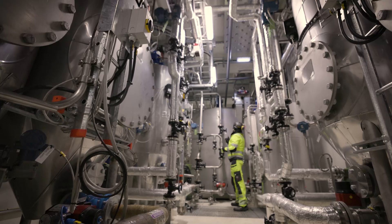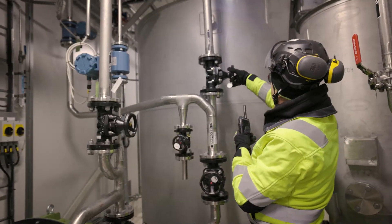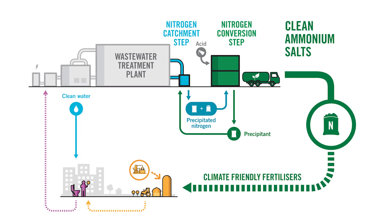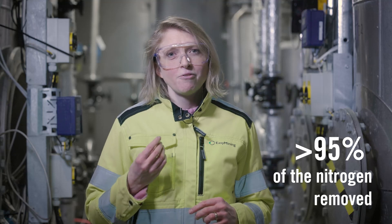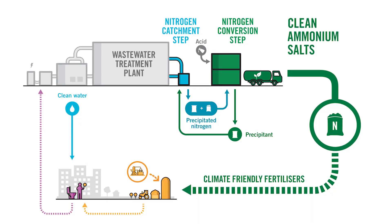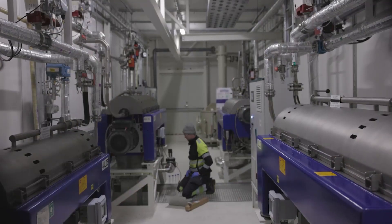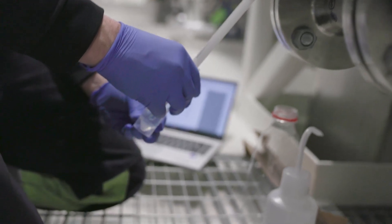Aqua 2M is a two-step process. First, the nitrogen is removed from the wastewater by adding a precipitant, magnesium phosphate, that catches the nitrogen in the water. We thereafter separate the precipitated nitrogen from the treated water. The treated water is led back to the wastewater treatment plant again with more than 95% of the nitrogen removed. In the second step, sulfuric acid is added to split the nitrogen from the precipitant, converting the nitrogen to ammonium sulfate.